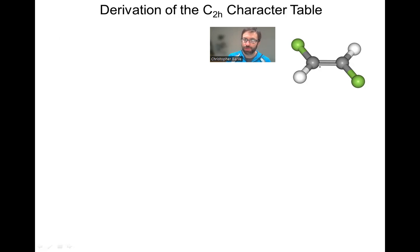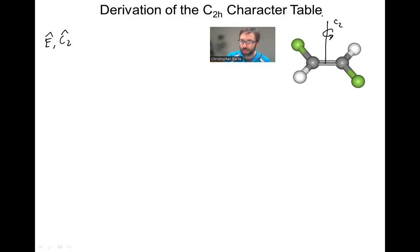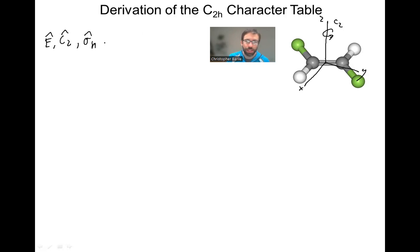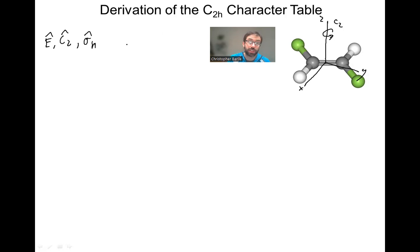We have to start off thinking about what all the symmetry elements are. There are E, C2 — the principal rotation axis. This is for C2H, so we're going to define C2 as our Z. We're going to have an X and a Y. There's one mirror plane, a sigma H, that is in the plane of the molecule — it's a planar molecule — and it's perpendicular to the principal rotation axis, which is Z. That's why it gets an H nomenclature; H stands for horizontal.